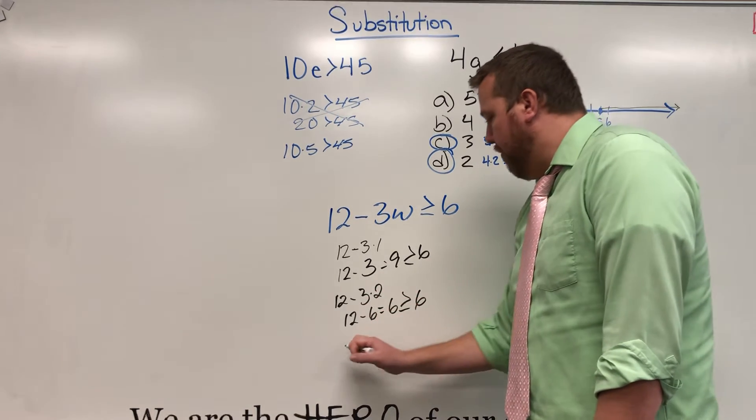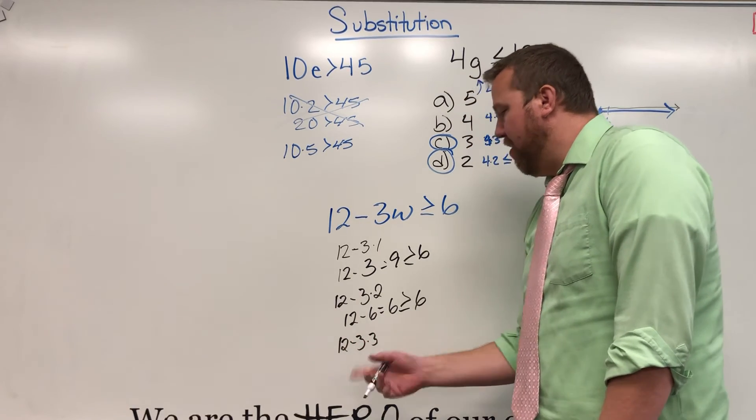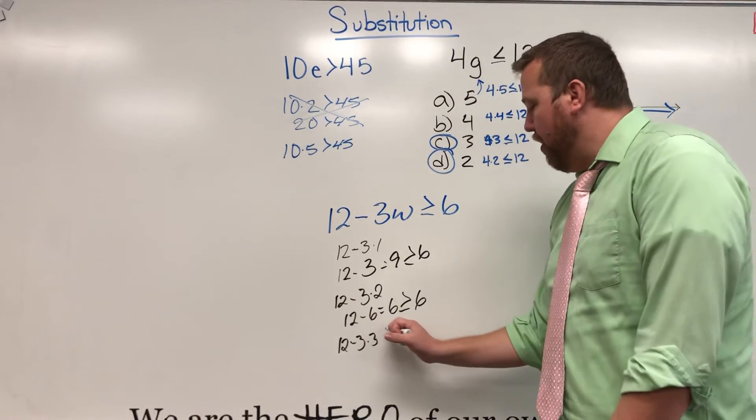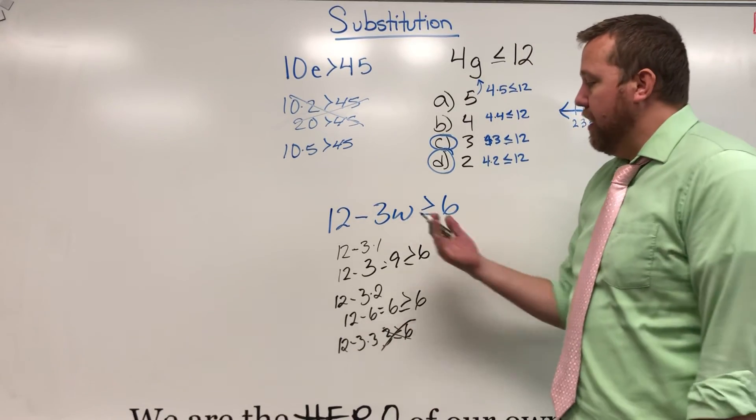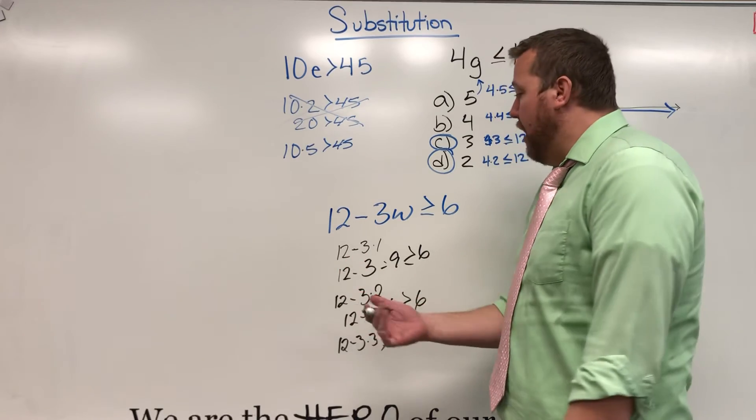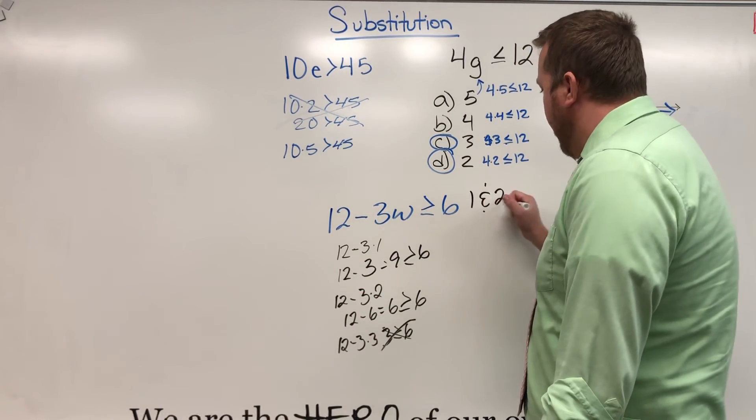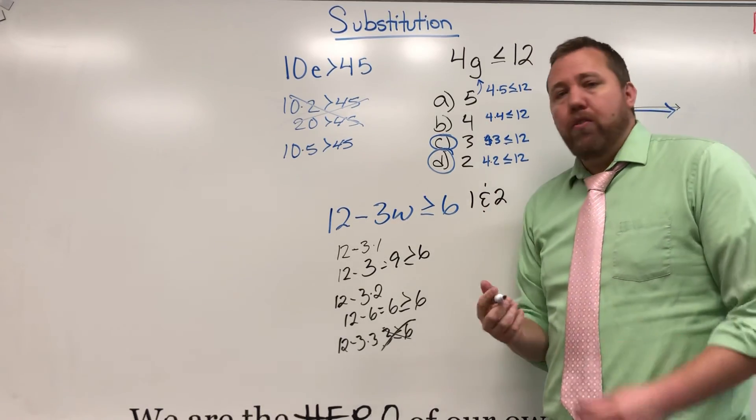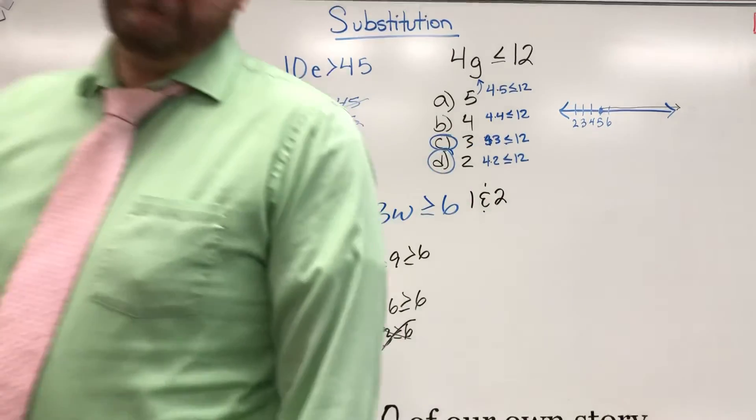Now if I go any further, 12 minus 3 times 3, that's 12 minus 9. 3 is not greater than or equal to 6. So really, on this one with whole numbers, all we have possible solutions are 1 and 2 for those answers. That is a quick review of Substitution.